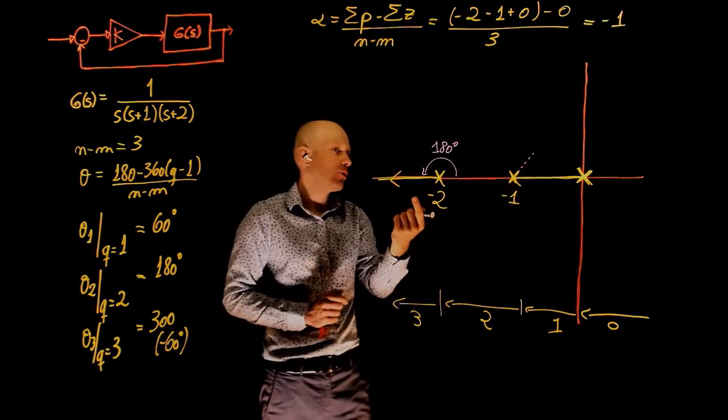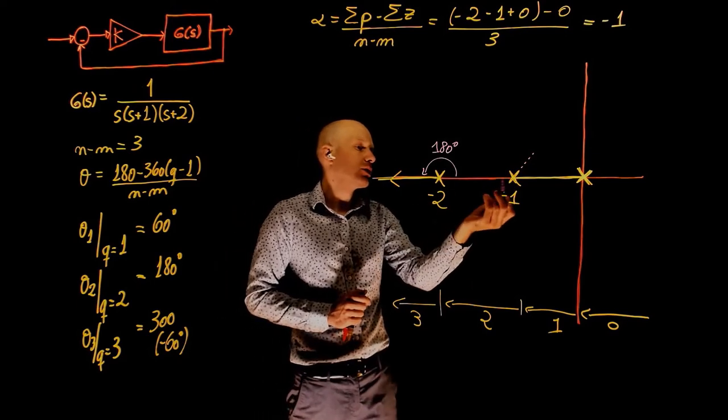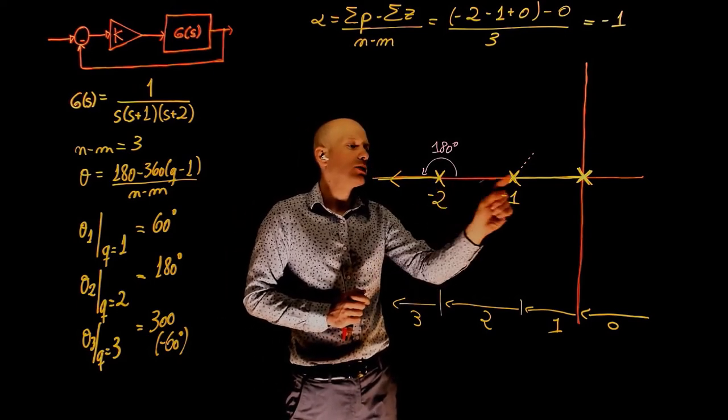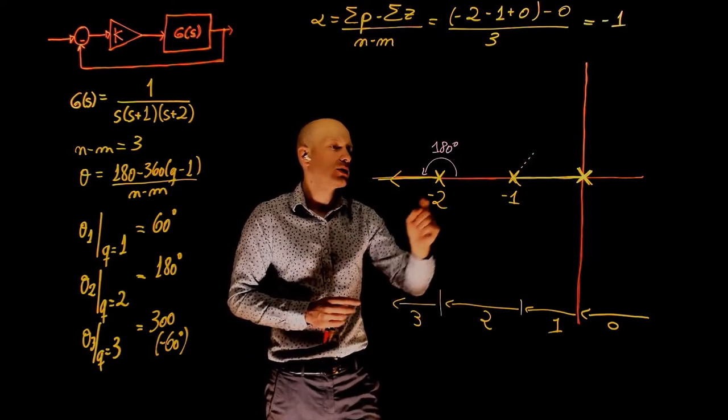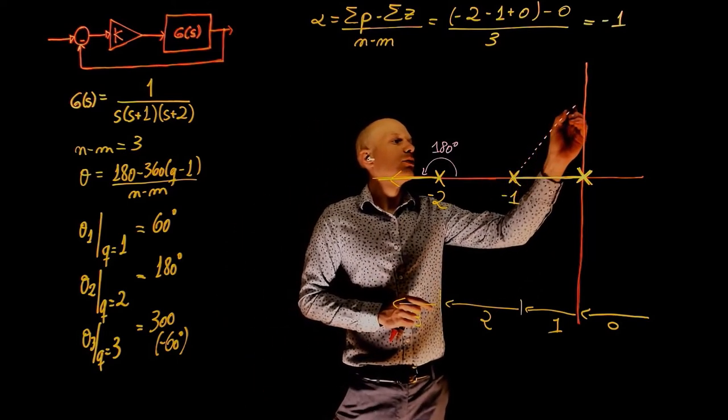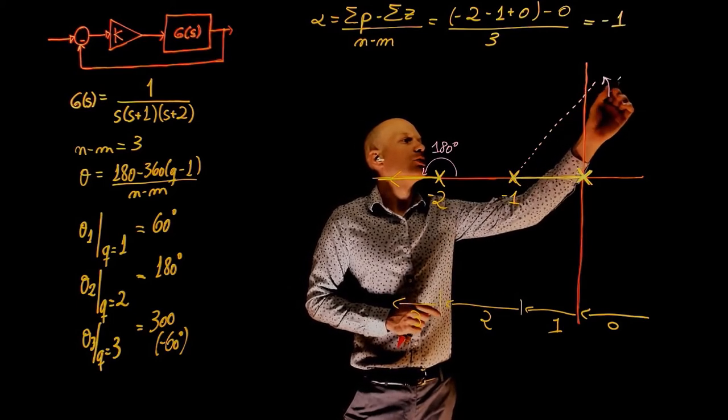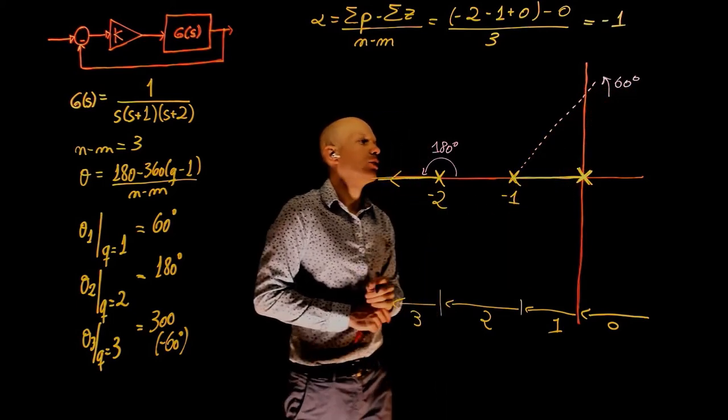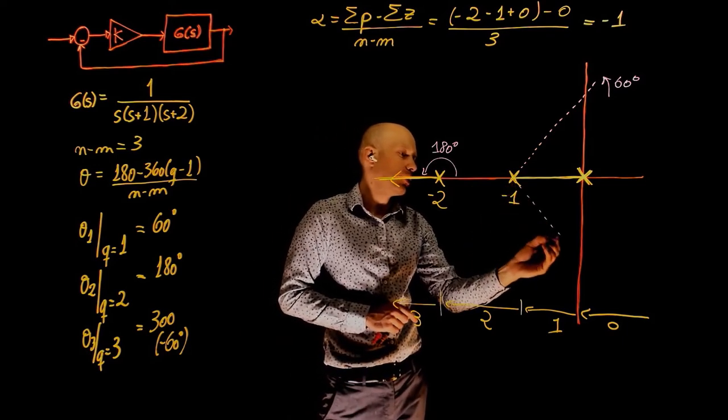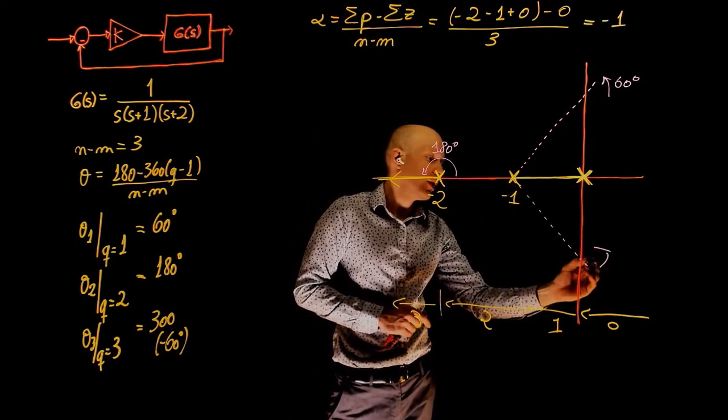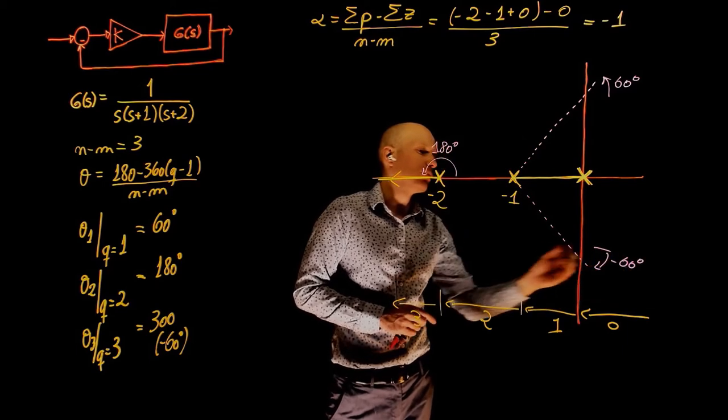It could not be negative 180 degrees, because then we have to occupy this portion of the real axis. And according to our count here, there shouldn't exist any root locus there. So one of the poles goes to infinity following this asymptote. The other one goes to infinity following a negative 60 degree asymptote.